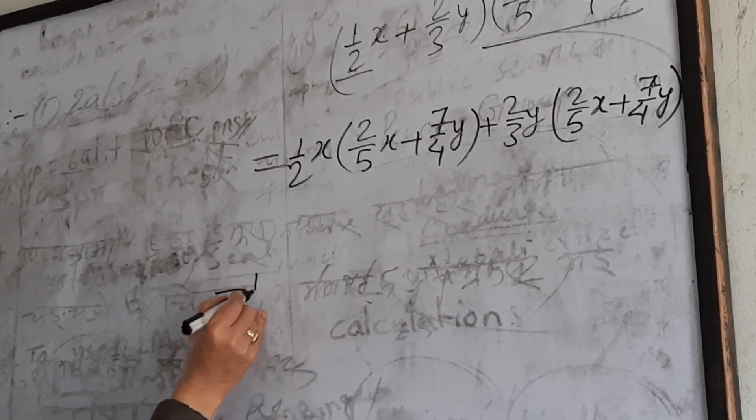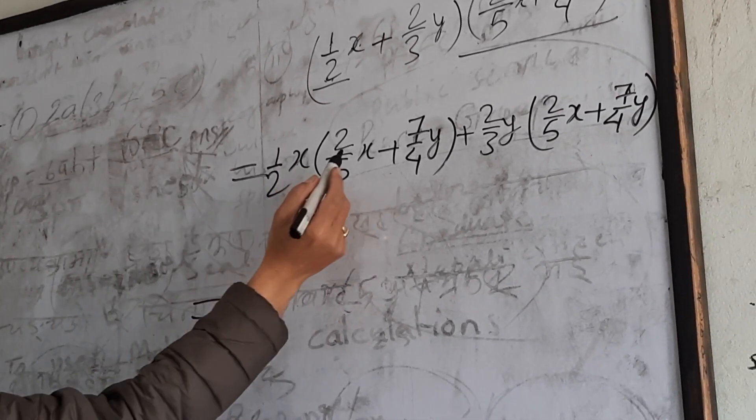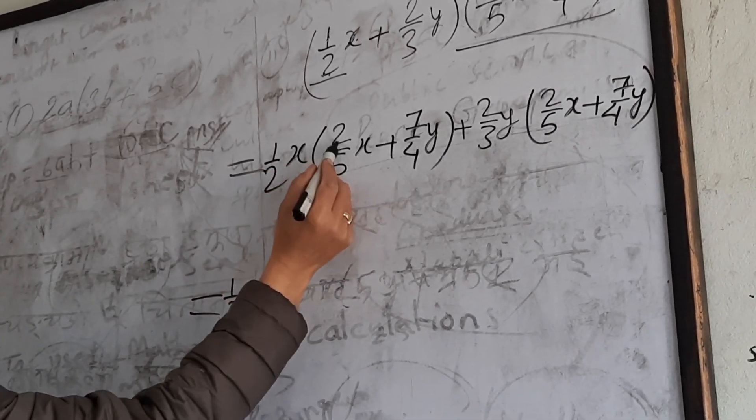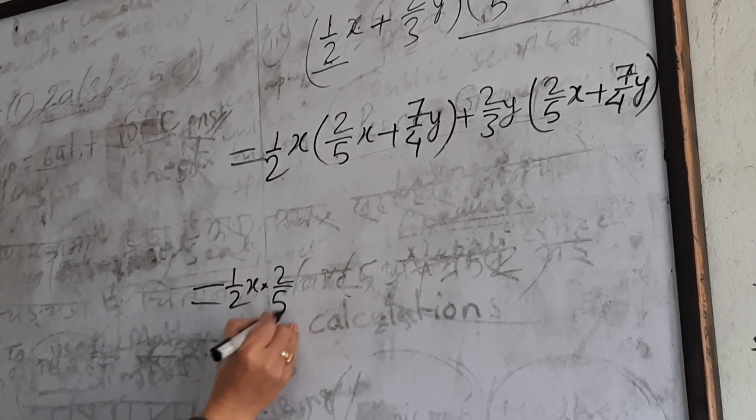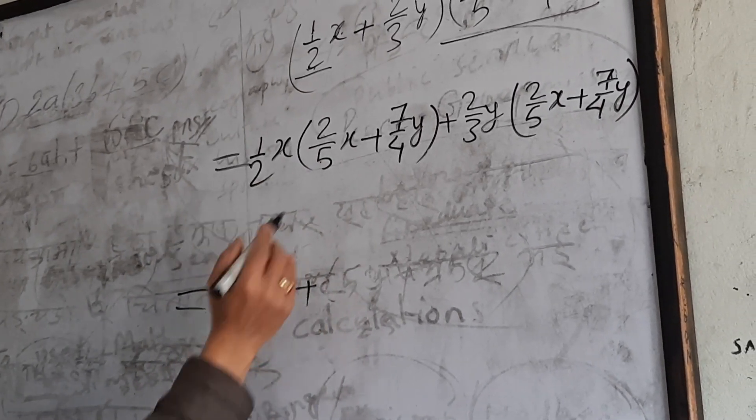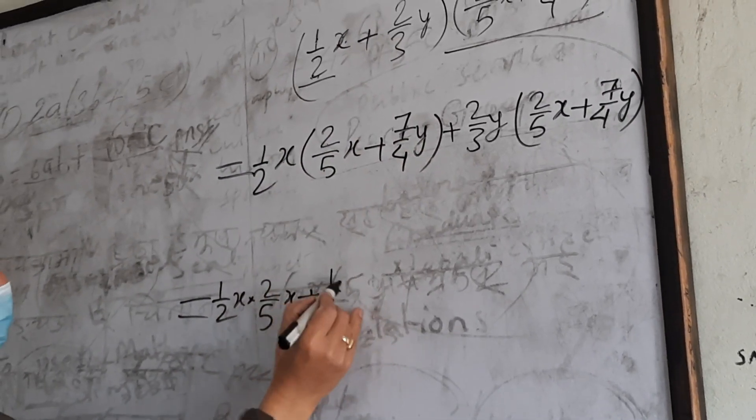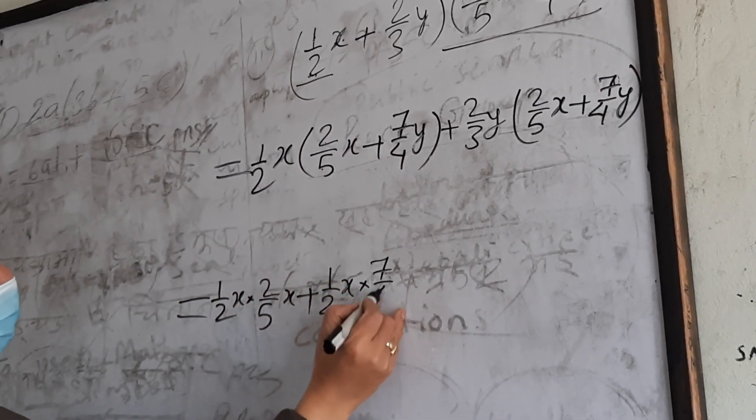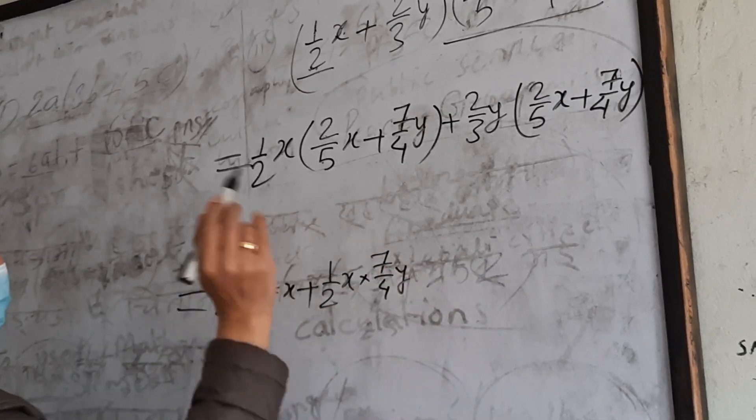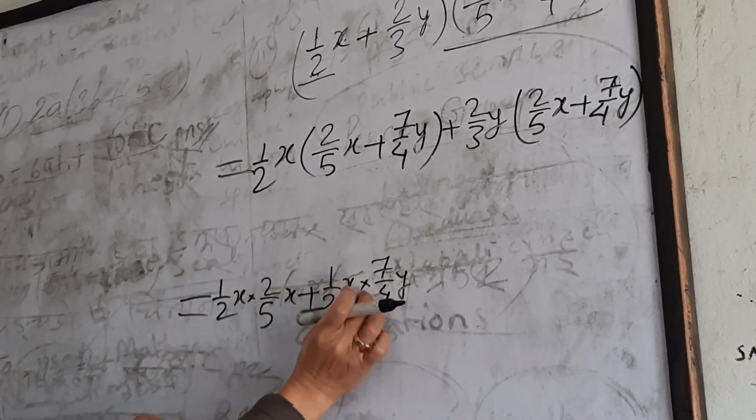1 by 2 x into 7 by 4 y. 2 by 5 x. 1 by 2 x into 7 by 4 y. Now we are going to take a test on this wise video.